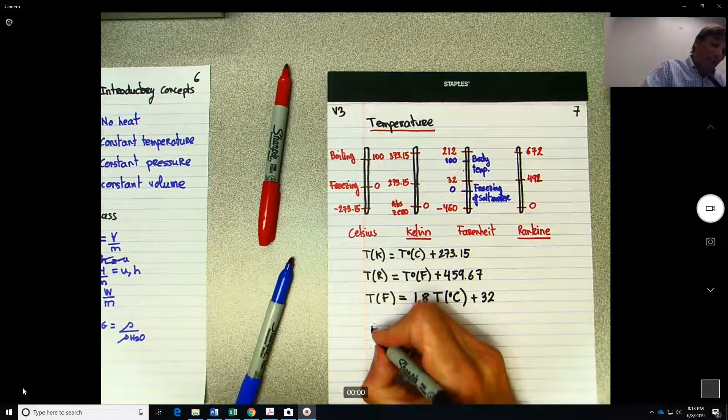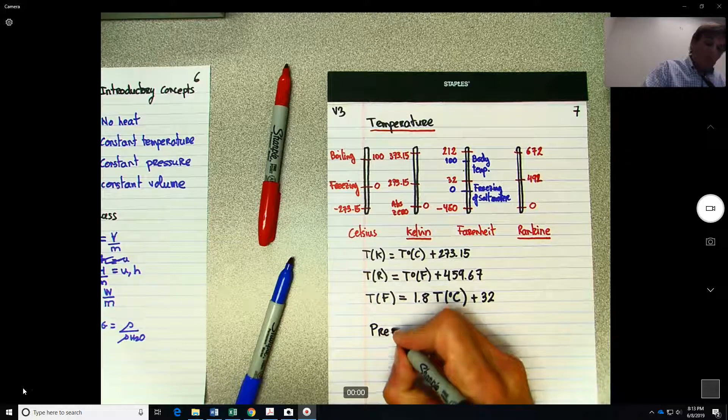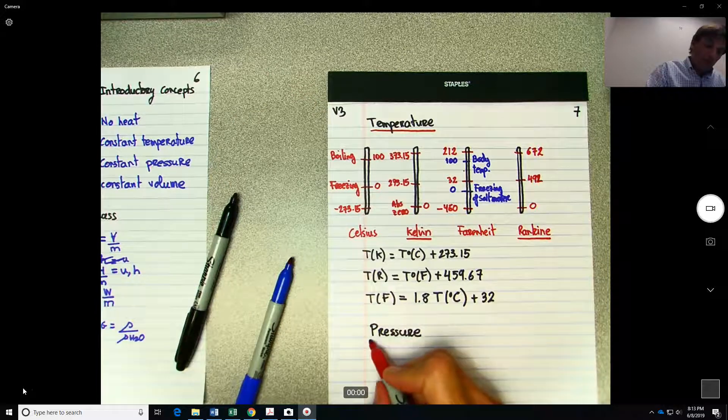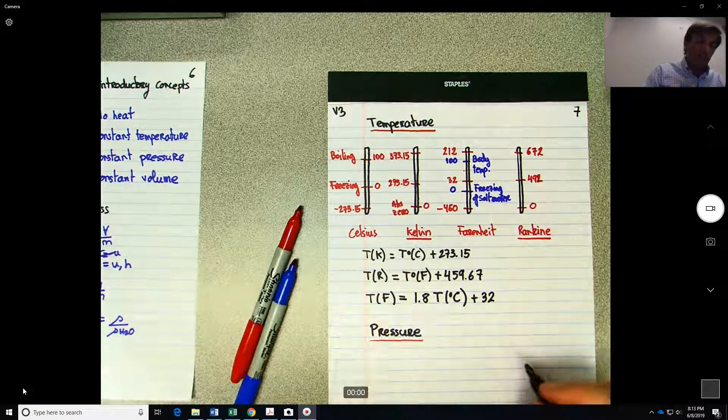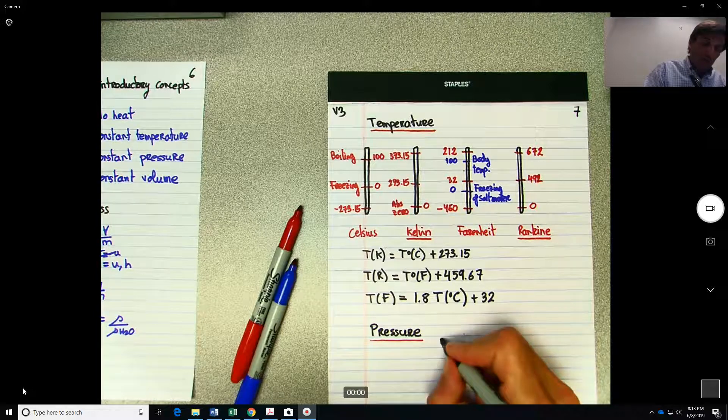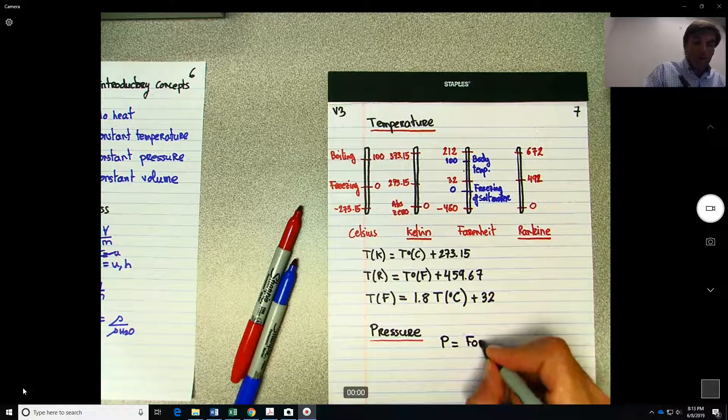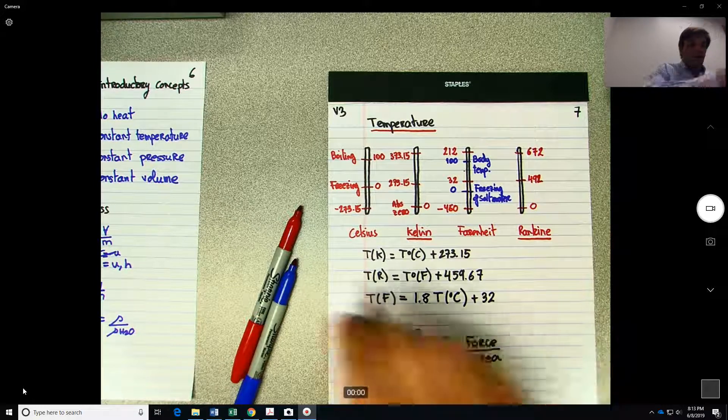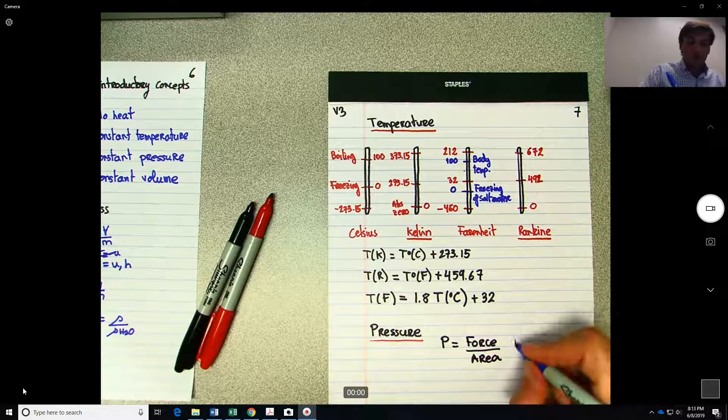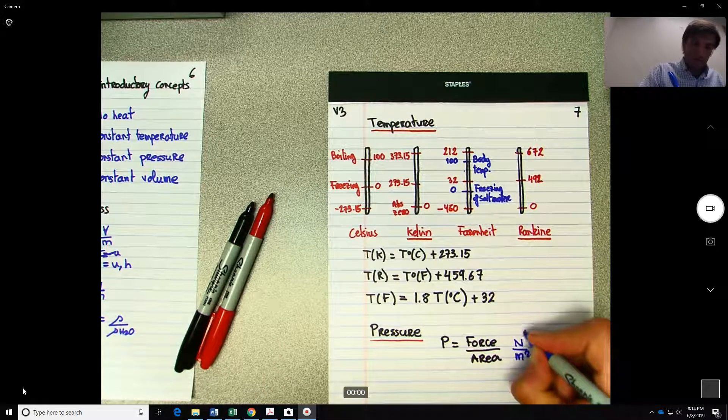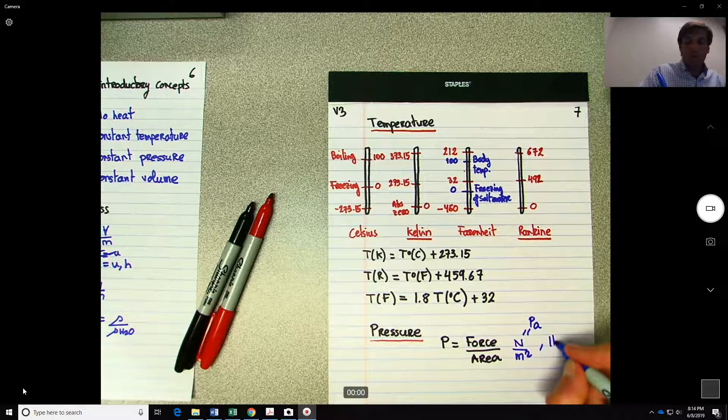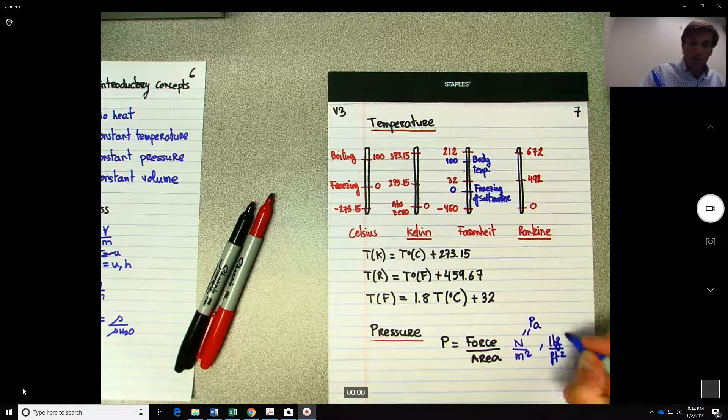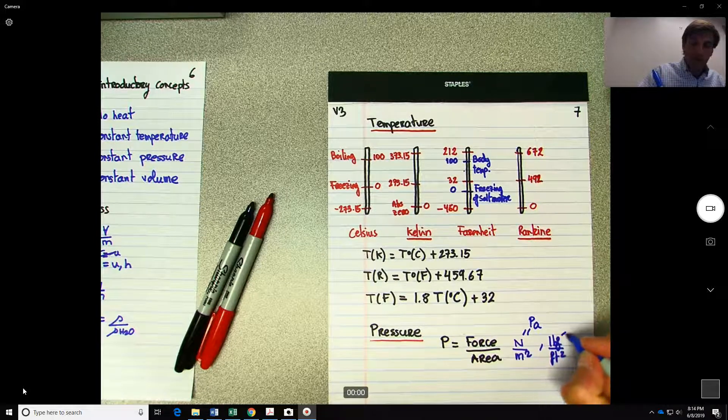And finally, I'm going to define the pressure. So the definition of the pressure will be pressure equals force over area. So the units will be Newton per meter squared, which is also Pascal. Or could be pound force over foot squared, which sometimes they also call this psi.